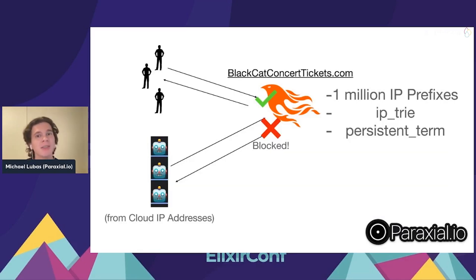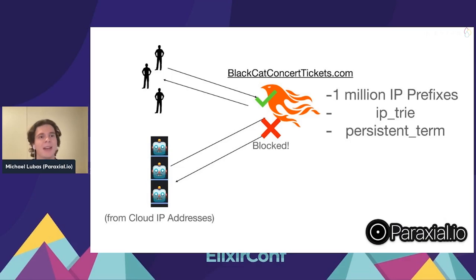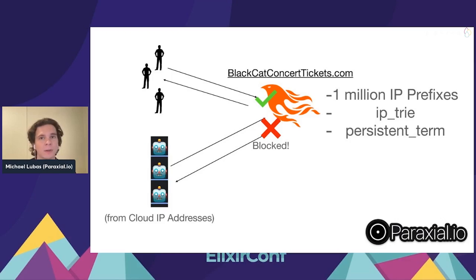With ETS, accessing a 28-megabyte trie across 20 processes caused a memory spike up to 3,000 megabytes — completely unworkable. With persistent term, that same test peaks at 300 megabytes, and the spike is only due to generating fake data. Once the IP trie was generated and put into persistent term, there was absolutely no memory variance. You could have thousands of processes accessing it and your memory usage stays stable — exactly what you want.